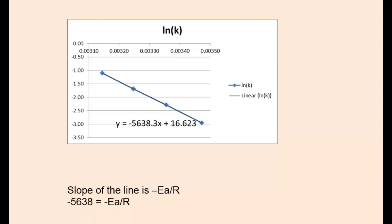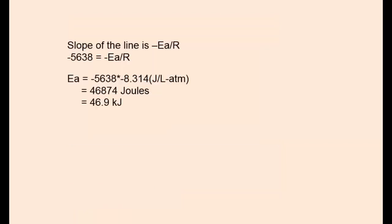According to the Arrhenius equation, the slope is equal to the negative activation energy divided by the ideal gas constant R. In this case, we'll set negative 5,638 equal to negative Ea over R. The double negatives cancel, and solving for the activation energy and converting it to kilojoules, we end up with 46.9 kilojoules.